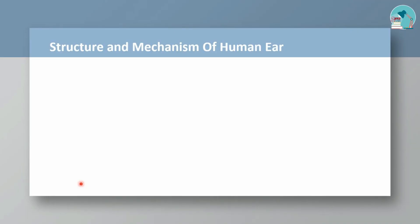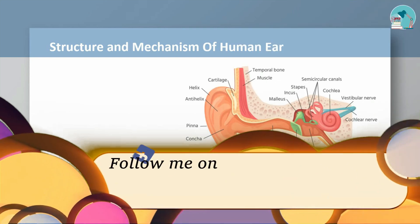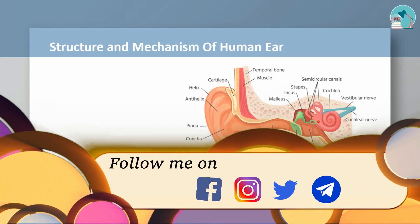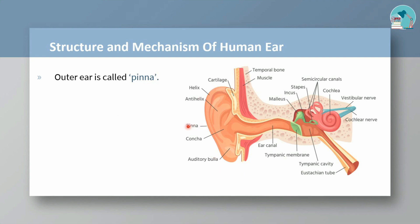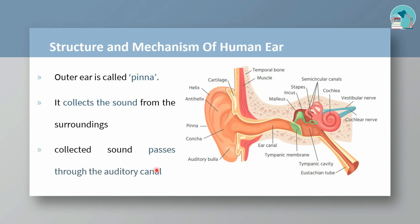Let's look at the human ear structure and mechanism. The human ear structure is like this. If you look at the outer ear, it is the pinna. It collects the surrounding sound. The collected sound travels into the auditory canal, which is the ear canal.